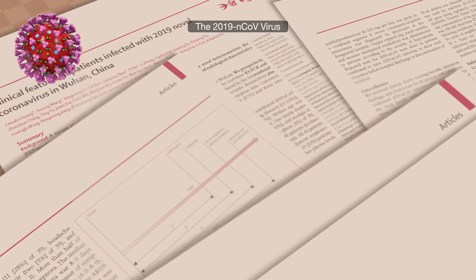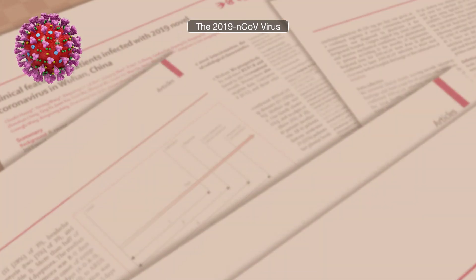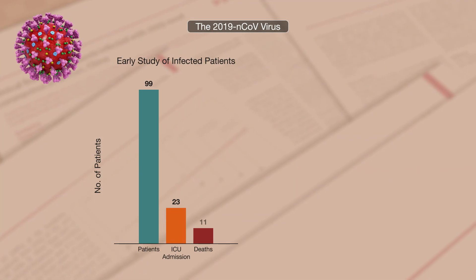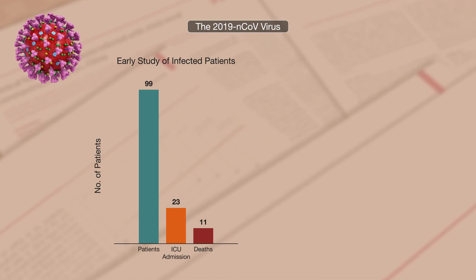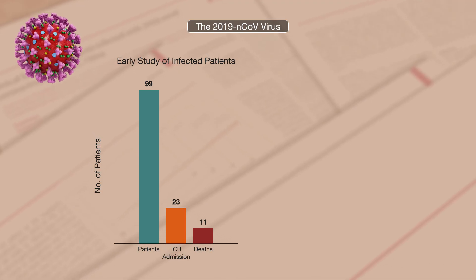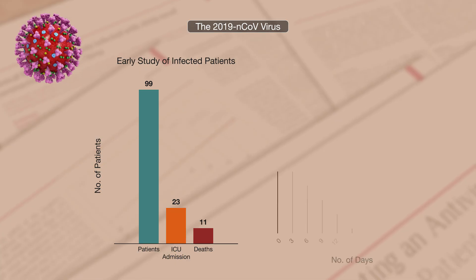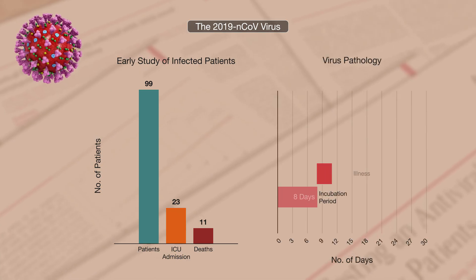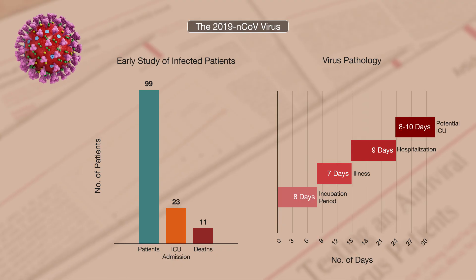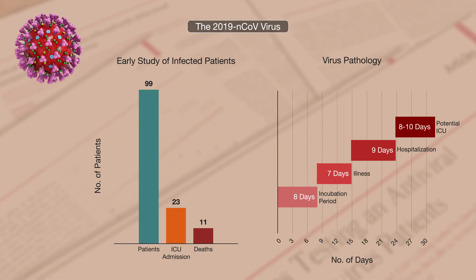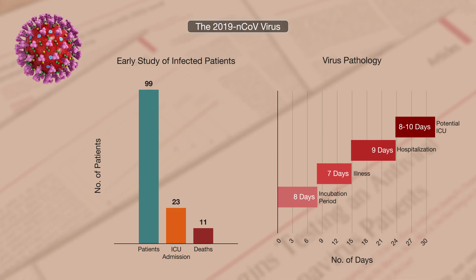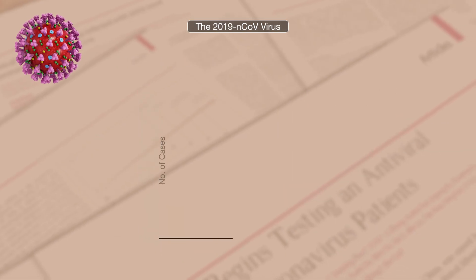Much is yet to be known about the 2019 novel coronavirus. An early study of 99 infected showed a high mortality of 11%, similar to SARS, and ICU admission rates of 23%. An earlier study described a virus pathology with an eight-day incubation period, a week of infection, followed by a potential escalation to hospitalization and intensive care over another eight to ten days. Other indications put the mortality rate closer to four percent.